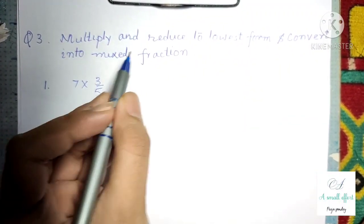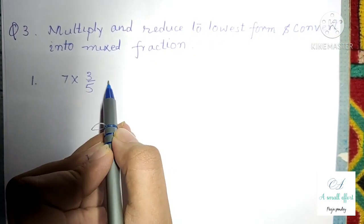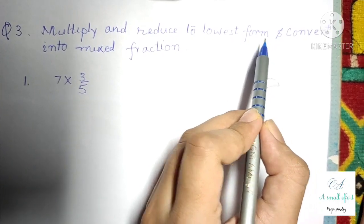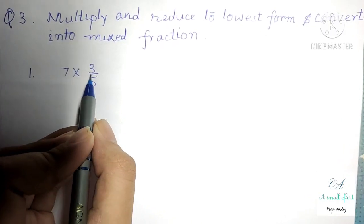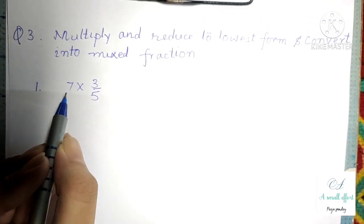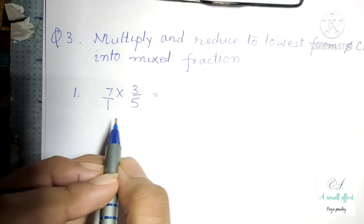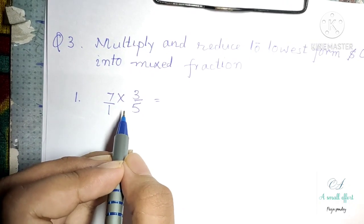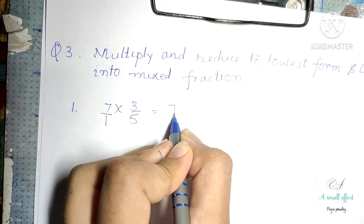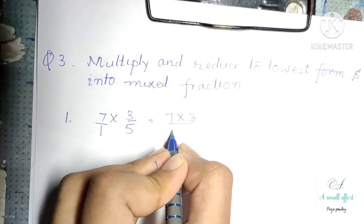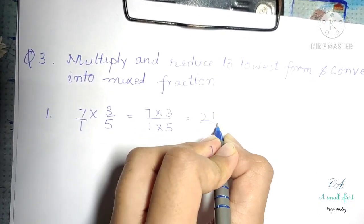Question number 3 tells us we have to multiply and reduce the solution into lowest form, or convert into mixed fraction. Our first question is 7 into 3 by 5. We can write 7 as 7 by 1. While multiplying fractions, we multiply the numerator with the numerator and the denominator with the denominator. So 7 into 3 divided by 1 into 5 equals 21 by 5.